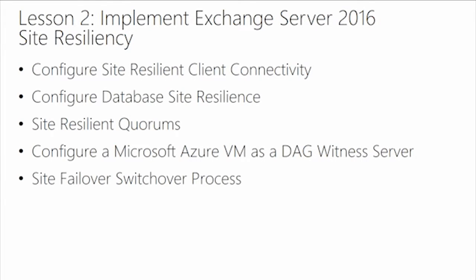In terms of the failover process, some organizations want databases to failover automatically inside a site. You configure your DAG to say failover can happen inside this site only, or across the DAG. Or you require manual intervention — this is where you enable DAC mode, database activation coordination, to prevent databases from splitting and automatically mounting on the other side, so you manually intervene in that process.